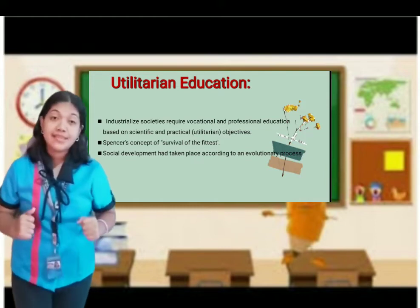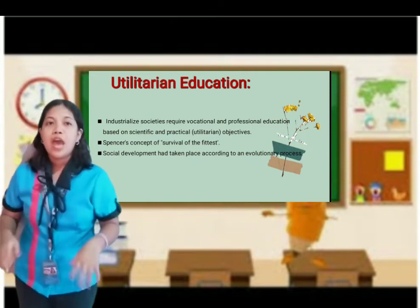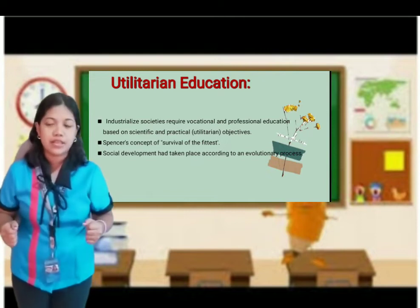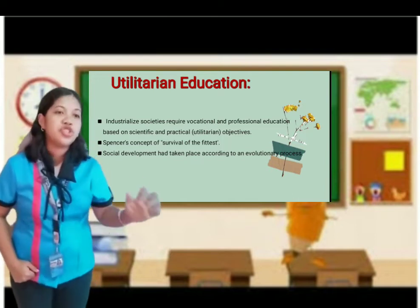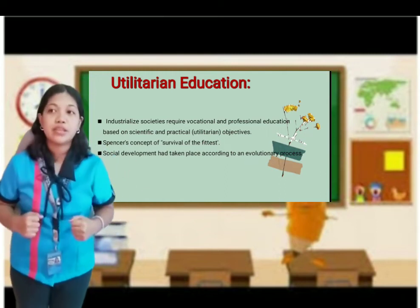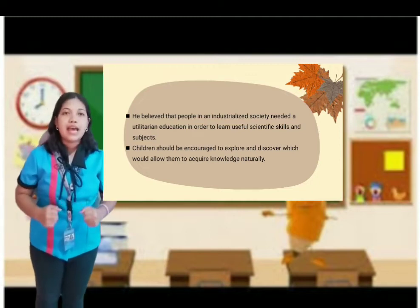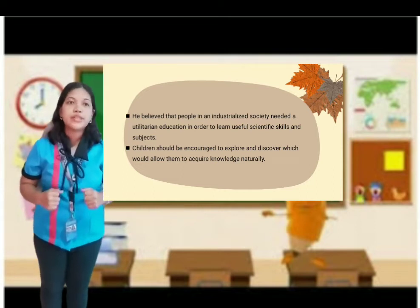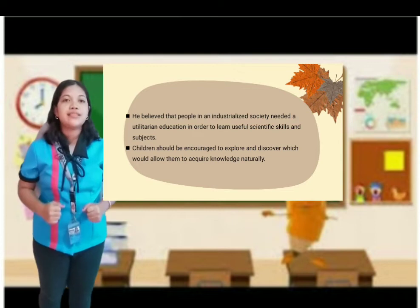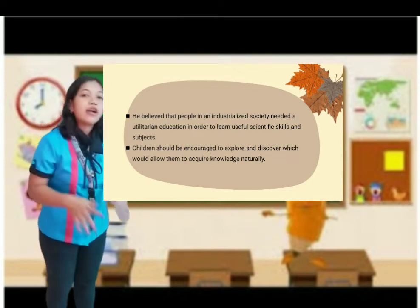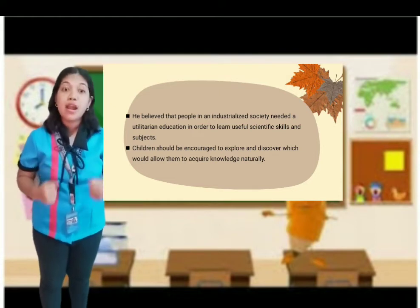What does it mean? It means that human development had gone through an evolutionary series of stages, from the simple to the complex, and from the uniform to the more specialized kind of activity. Social development had taken place according to an evolutionary process, by which a simple homogeneous society system is characterized with humanistic and classical education. He believed that people in an industrialized society needed a utilitarian education to learn useful scientific skills and subjects — meaning that learning should be a sensory experience wherein a student interacts with his or her environment through a slow, gradual, and adaptive process. Children should be encouraged to explore and discover, allowing them to acquire knowledge naturally.